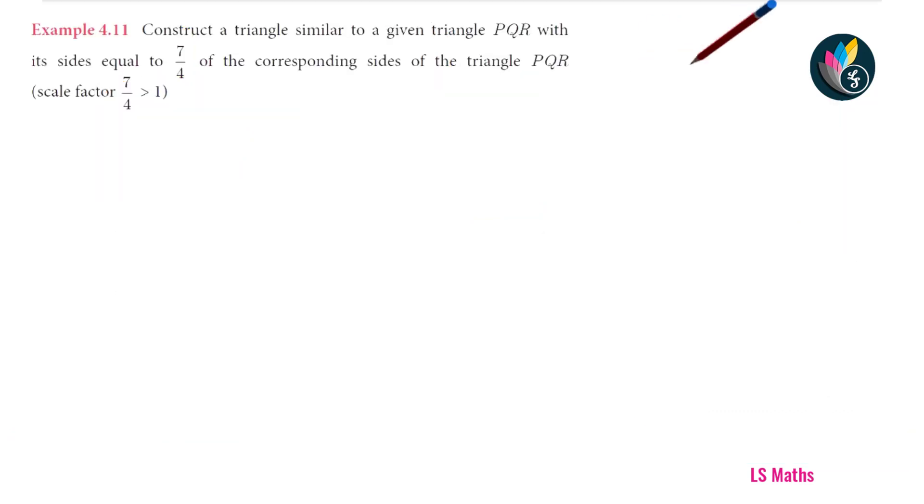First step, let us draw the rough diagram. Mark 3 points and draw a triangle. Mark the point P here, Q here and then R here. Now, join PR, mark P prime and R prime and then 4 cm on all the three sides of the triangle.